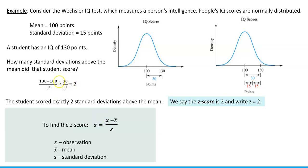The z-score can be either positive or negative. In our case the score is positive because 130 minus 100 is positive 30, and positive 30 divided by 15 is 2. We get a negative z-score when the first value is less than the second — meaning the actual observation or data value is less than the mean. That happens when our observations lie to the left of the mean.